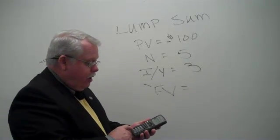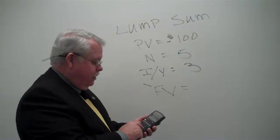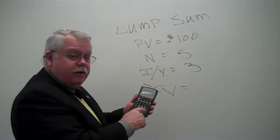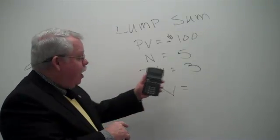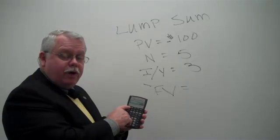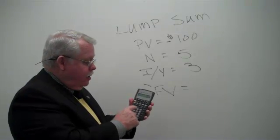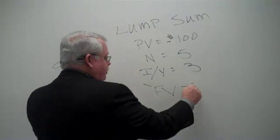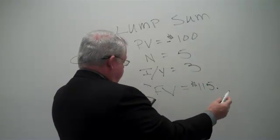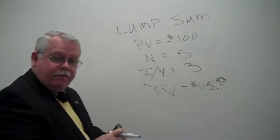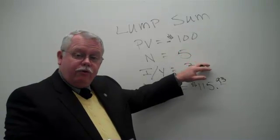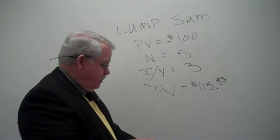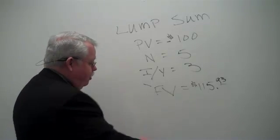Let's do the calculation. I've got negative $100 for present value, 5 and then enter N, then 3 and press I/Y for the interest rate per year. Then I'm going to use the compute button, CPT, and compute the future value. What I get here is $115.93. If I put that $100 in the bank and leave it there for 5 years earning 3%, it will grow to become $115.93. Pretty straightforward calculation.